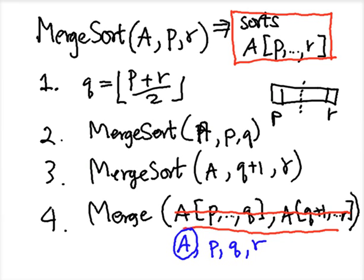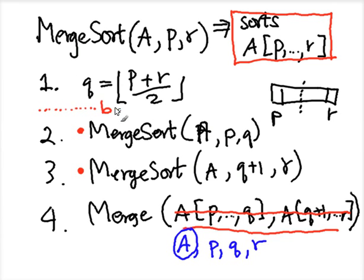This is the merge sort algorithm, but it's not complete because we have a recursive algorithm and we need some way to stop — otherwise you would recurse forever. So we need a base case. When you have a very small number of elements, like when P equals R, you should stop. Let's ignore that detail for now.